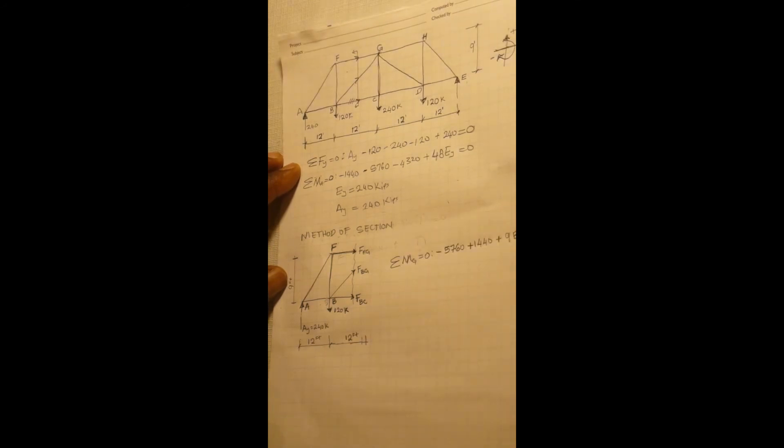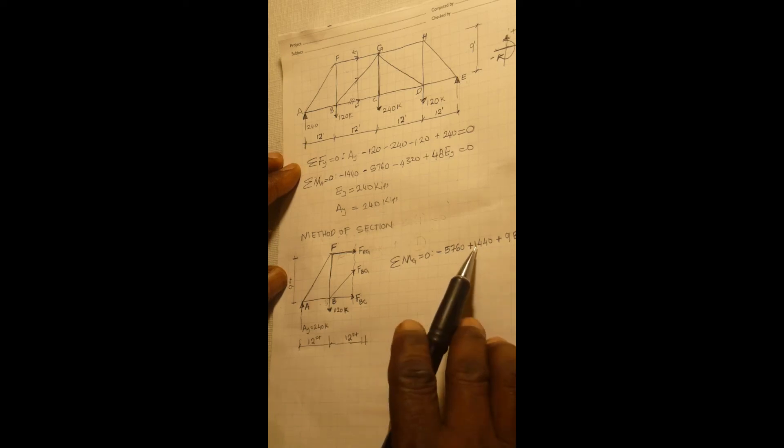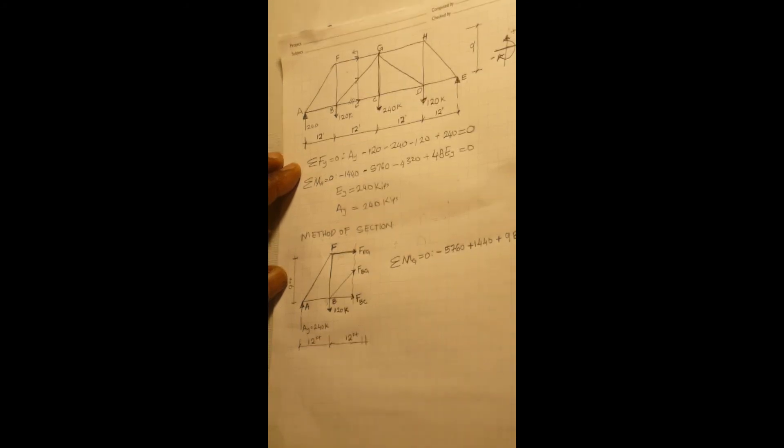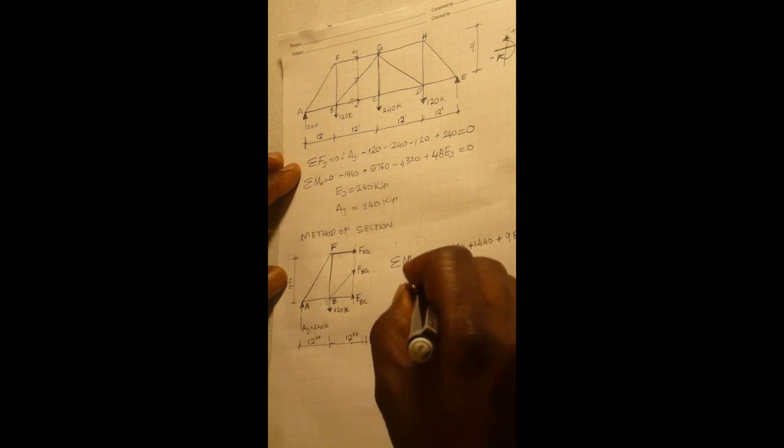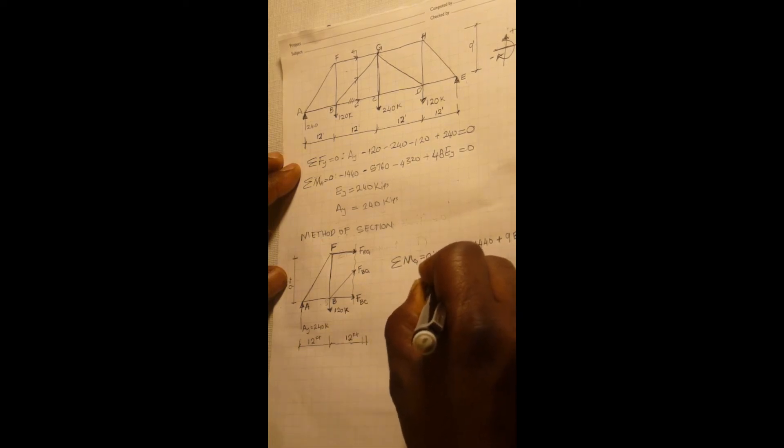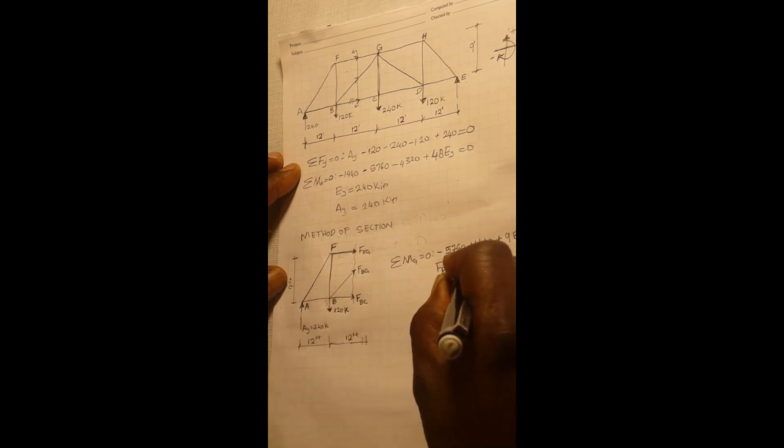And then when you do the simple arithmetic on this, 5760 minus 1440. Because when you move this to the other side, this becomes positive, this becomes negative. And divide that by 9. So force BC is equal to 480 kips.